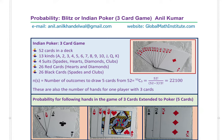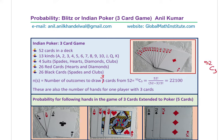There are 52 cards in a deck, 13 of each kind: Ace, 2, 3, 4, 5, 6, 7, 8, 9, 10, Jack, Queen, and King. Ace can also be placed after the King. There are four suits: spades, hearts, diamonds, and clubs. 26 red cards which are hearts and diamonds, and 26 black cards which are spades and clubs. The sample space when distributing three cards is 52C3, which equals 22,100.